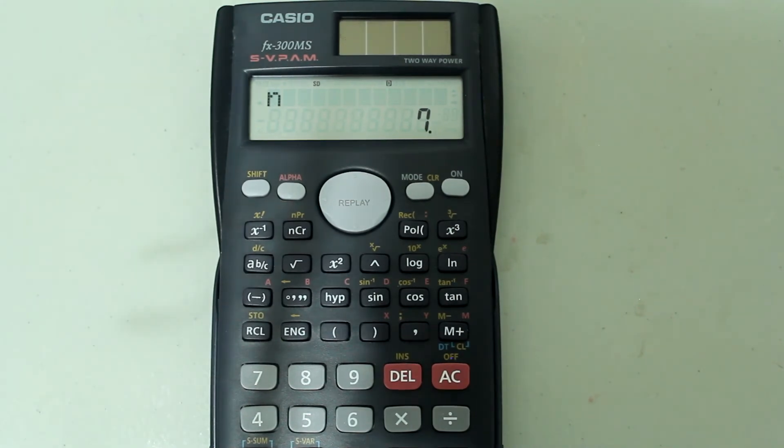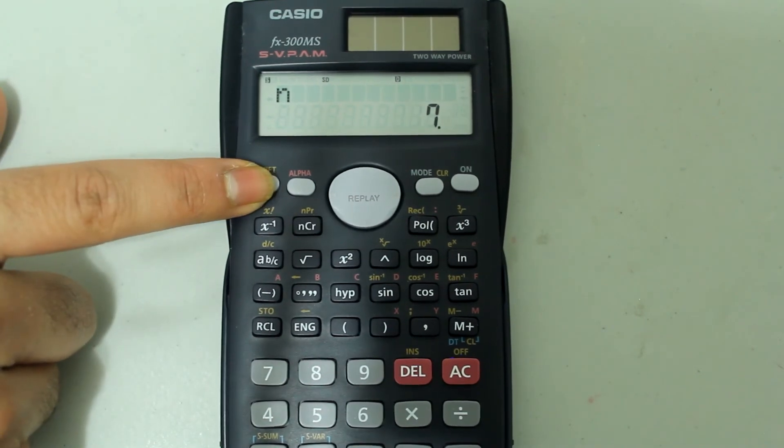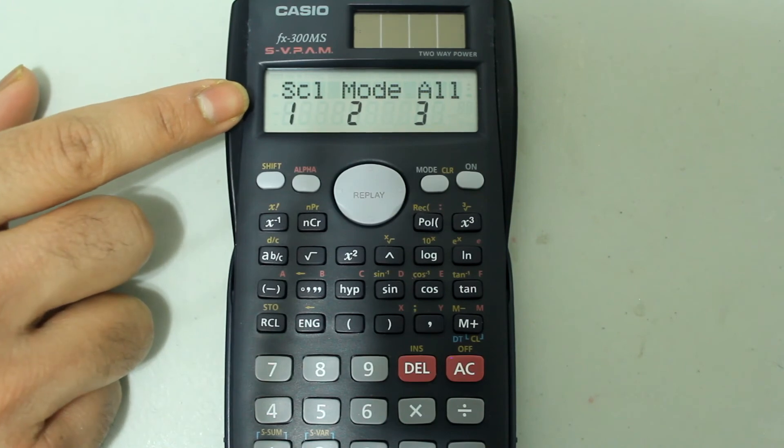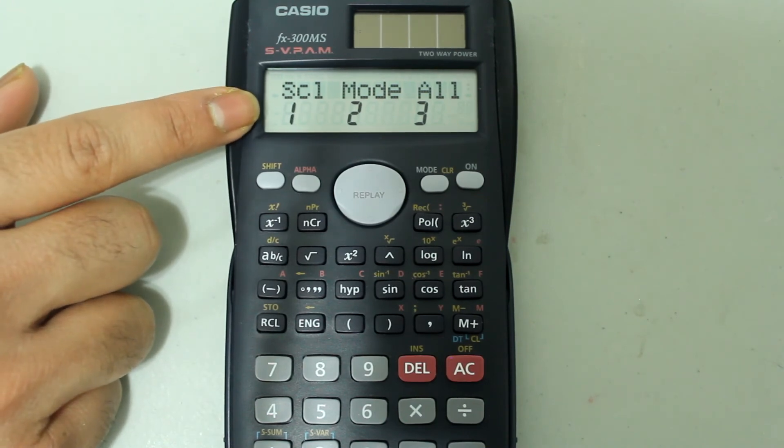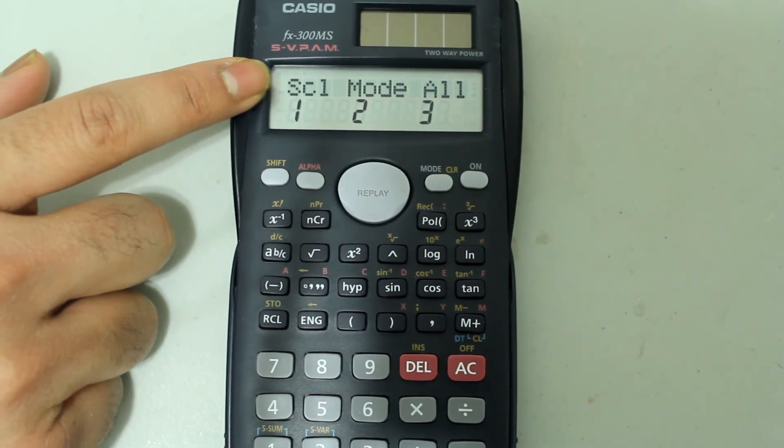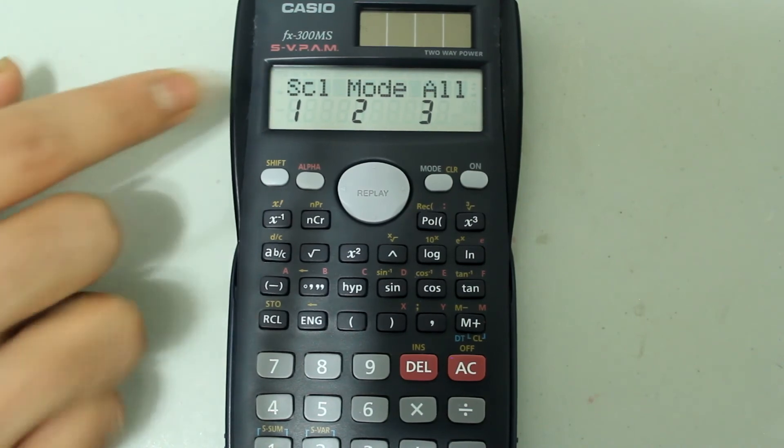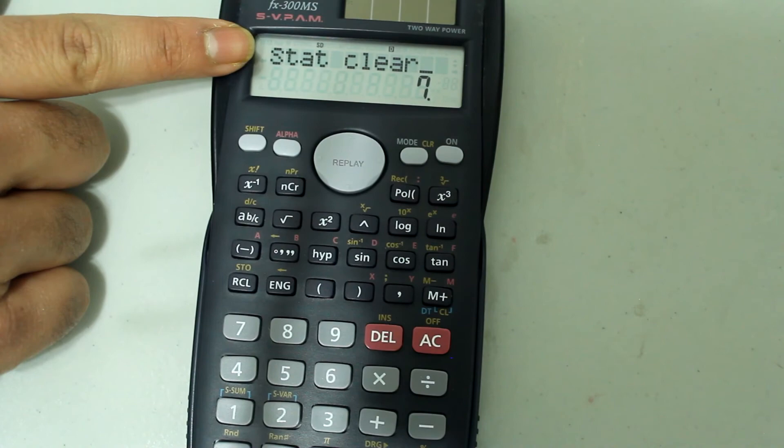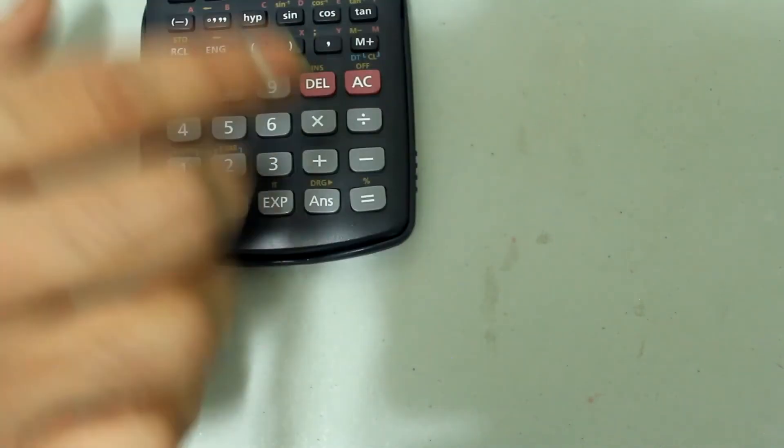Now a lingering question might be how do you delete a stored data set. So all you need to do in order to delete a stored data set is press shift and the mode button, and then press 1 to select SCL, which is stat clear. So press 1 on the number pad and this comes up, stat clear. Press enter.